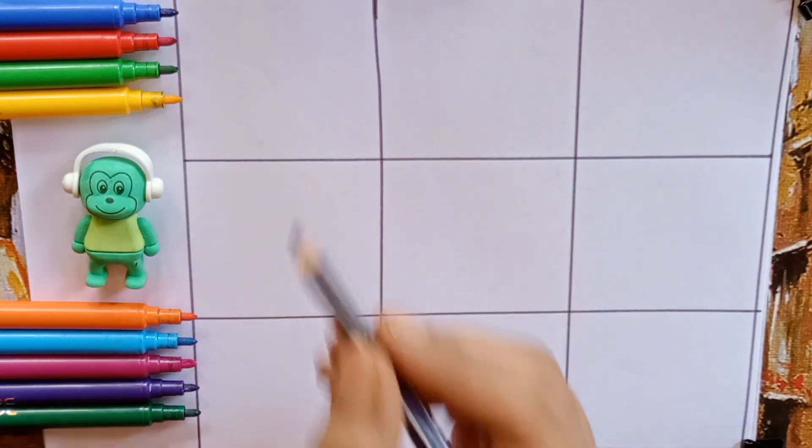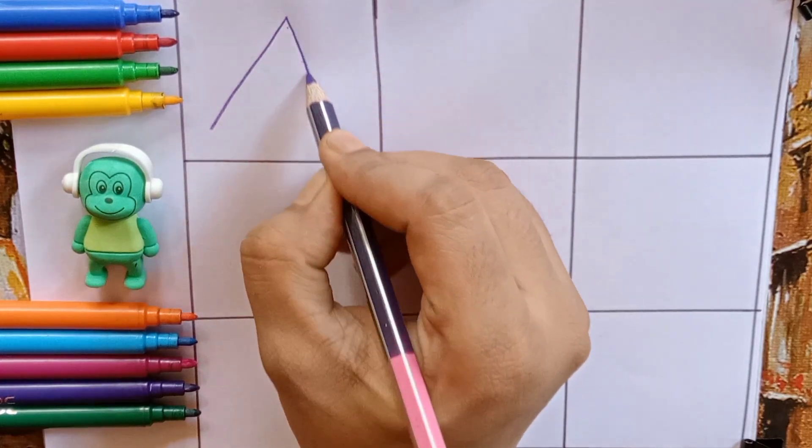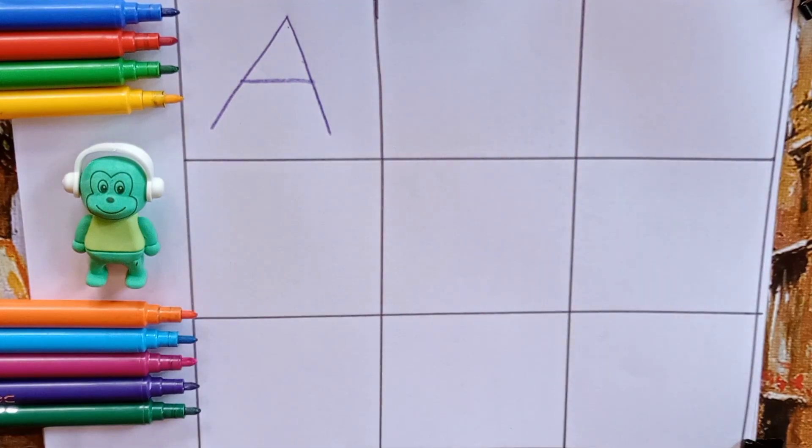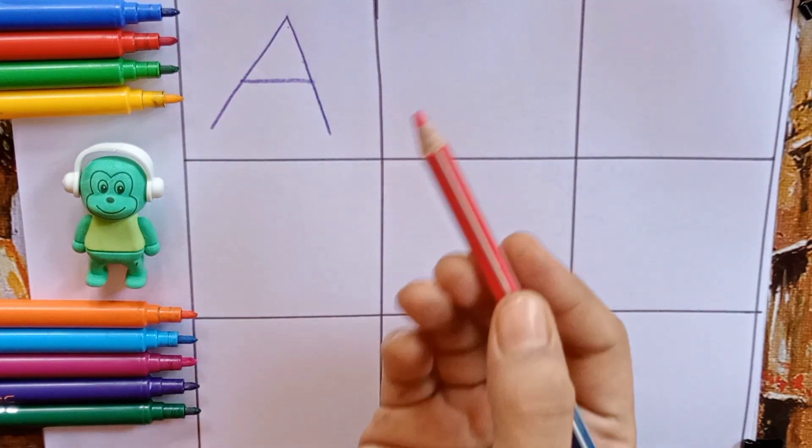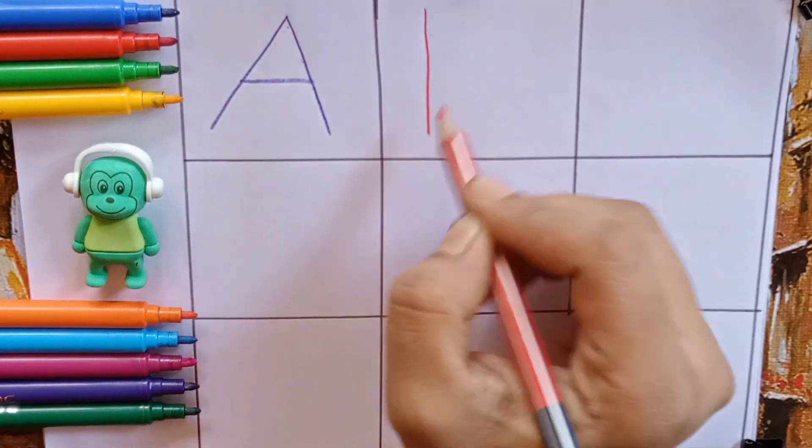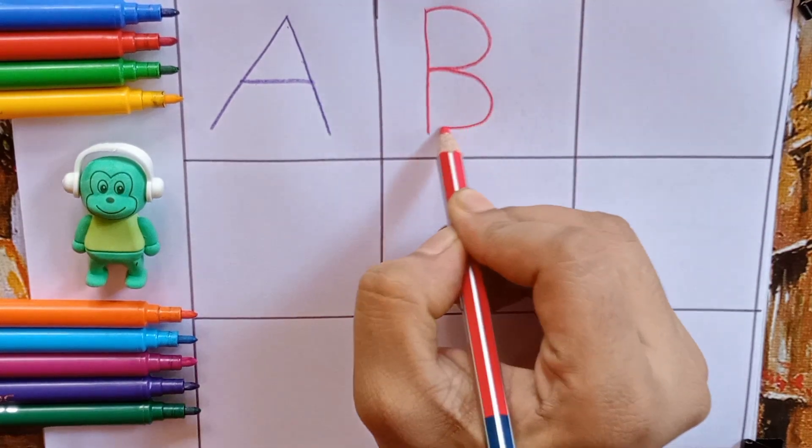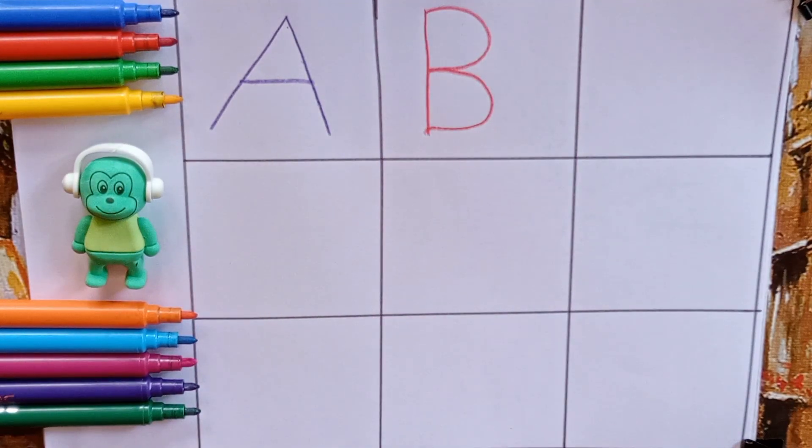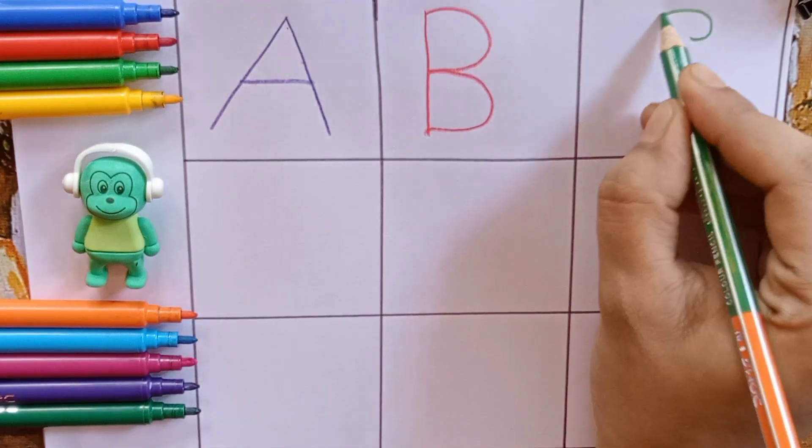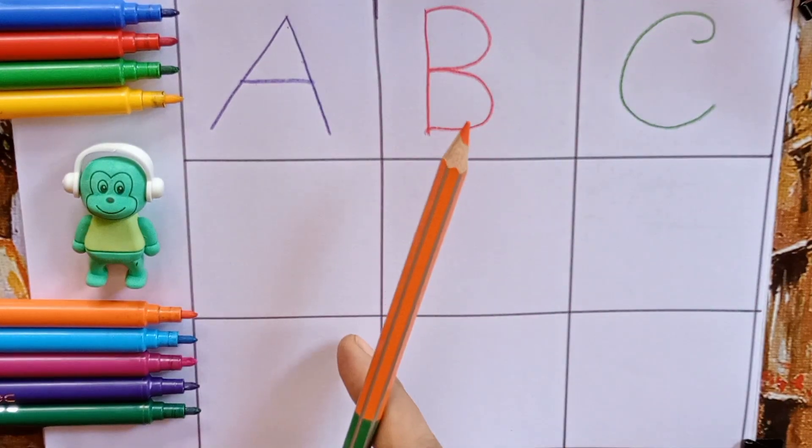Let's learn alphabets. Purple, blue color. A for ant. Ant is an insect. A. Red. B. B for banana. Banana is a fruit. B. Light green. C. C for cow. Cow is an animal. C. Orange.